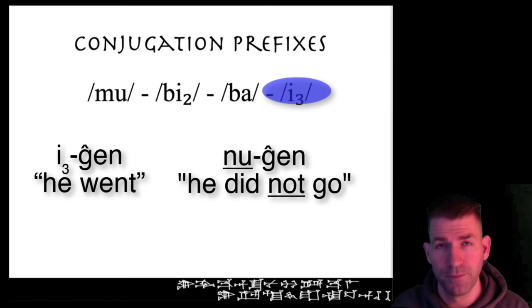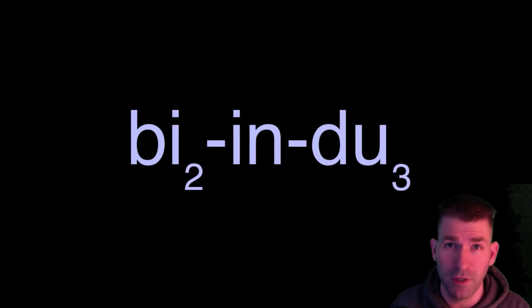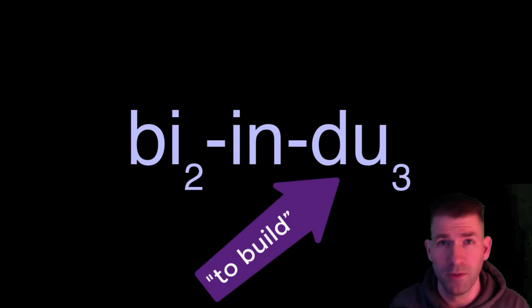As you can see, it is usually not necessary to remember that b₂ appears with transitive verbs, because if you see the form b₂-in-du₃, you will know that du₃ means 'to build' and that it is a transitive verb. However, it is good to understand at this stage that there are general correlations between the conjugation prefix and the type of verb it will normally appear with.